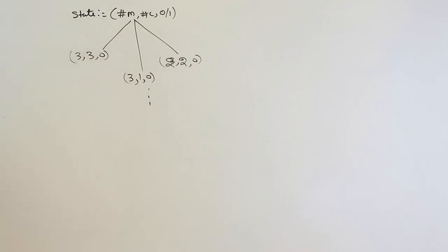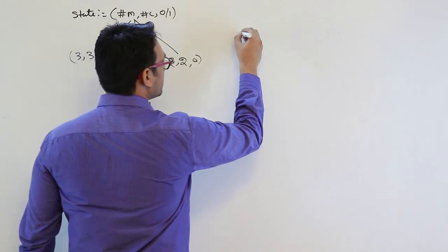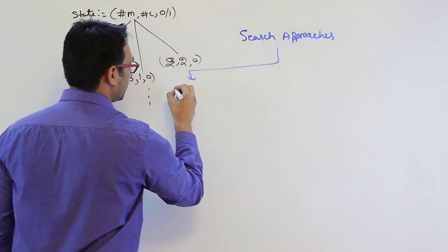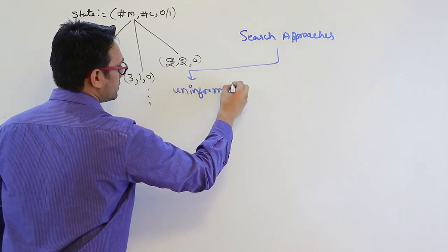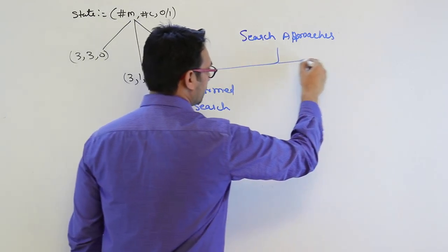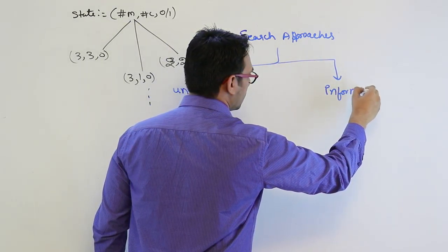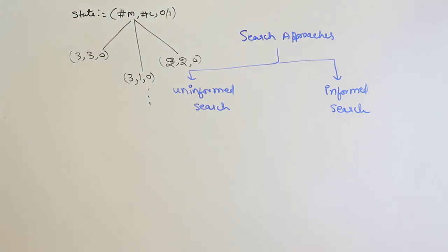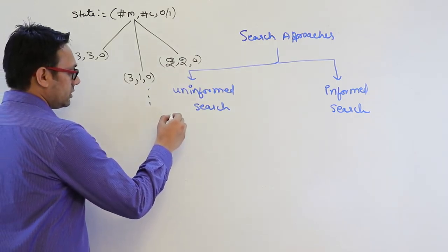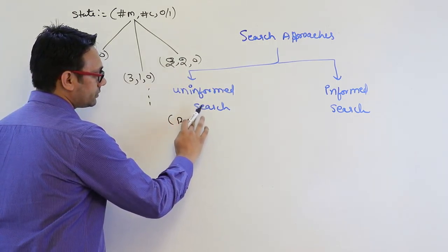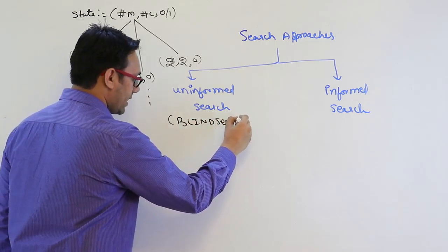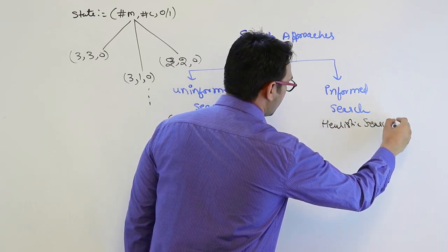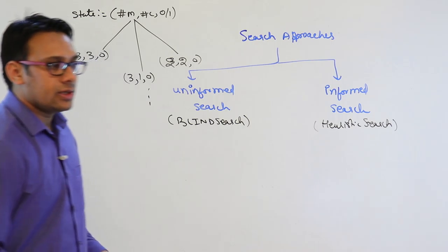To solve these problems, there are two types of search approaches. Number one is uninformed search, and the second is informed search. Uninformed search is also called blind search, and informed search is also called heuristic search.